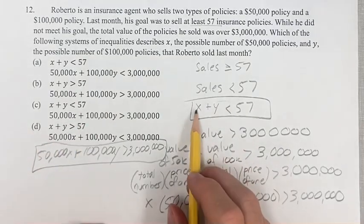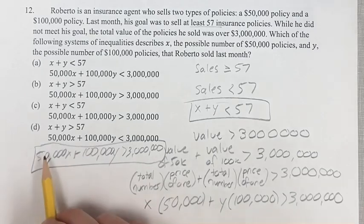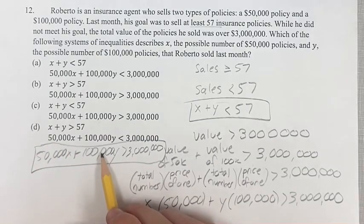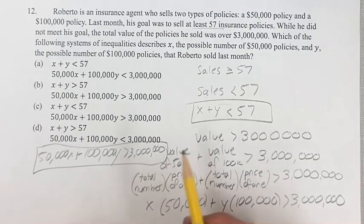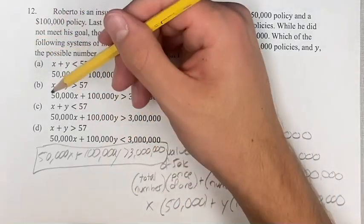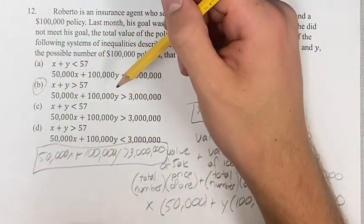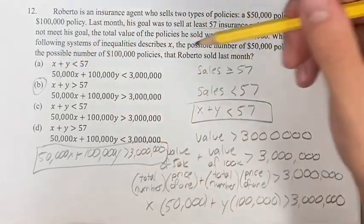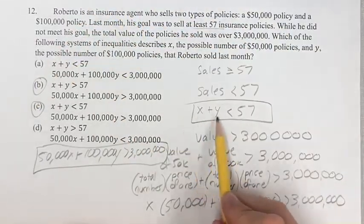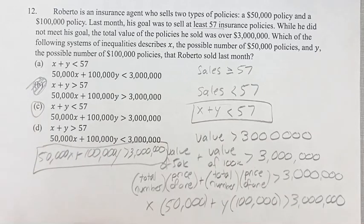So if we have x plus y is less than 57, and $50,000x plus $100,000y is greater than $3 million, then that is going to line up with answer choice C. Because we want x plus y less than 57, C is going to be your final answer. As always, thank you for liking and subscribing, and I'll see you in the next video.